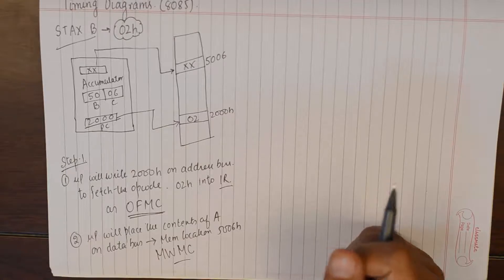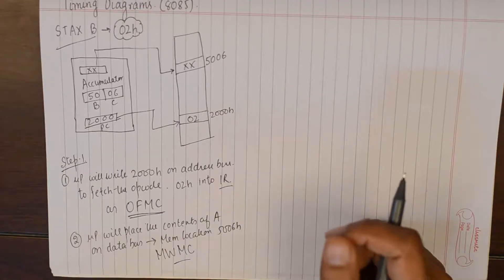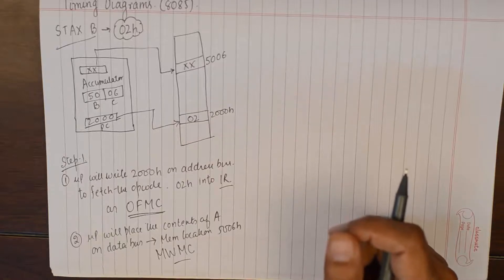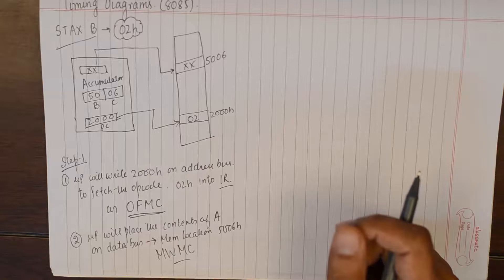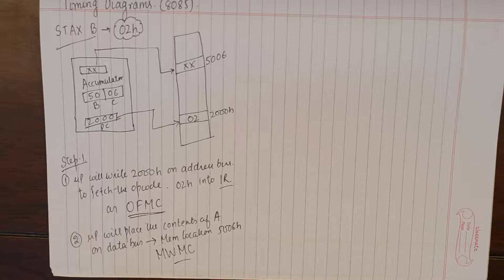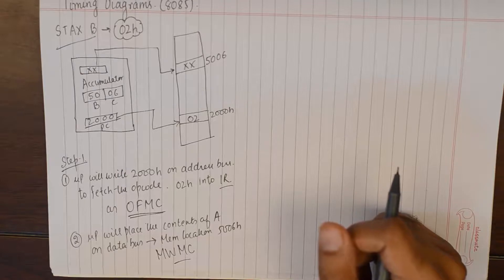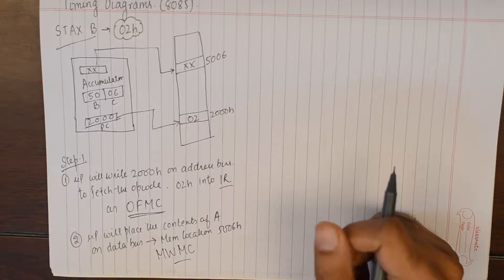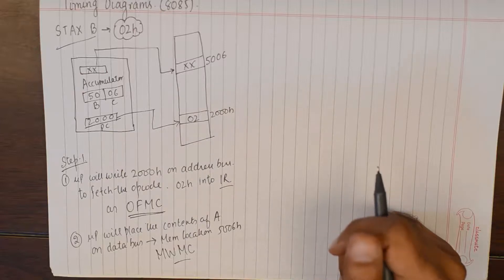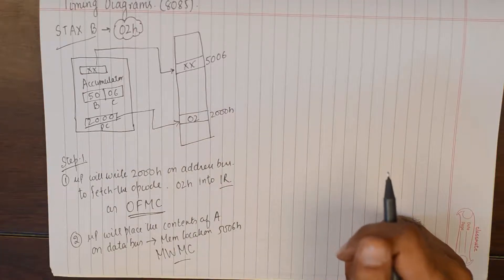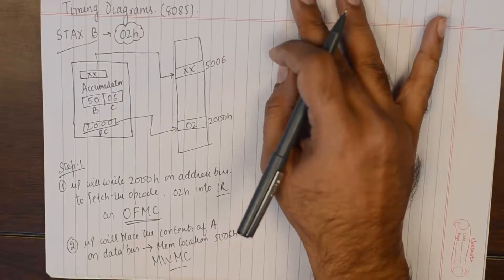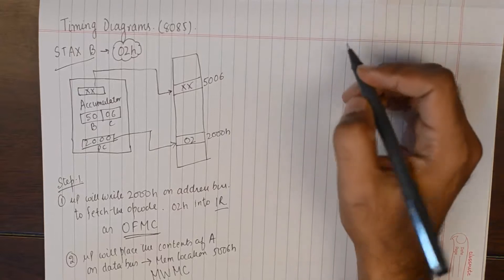The number of bytes has got nothing to do with the machine cycles of the instruction except for the fact that every instruction will be at least one byte and to bring that one byte into microprocessor one opcode fetch machine cycle is essentially required. But other than that there is no rule of thumb that relates the number of bytes present in the instruction to the number of machine cycles which are executed by the instruction. So that being said we will progress further into drawing the actual timing diagram for this instruction.